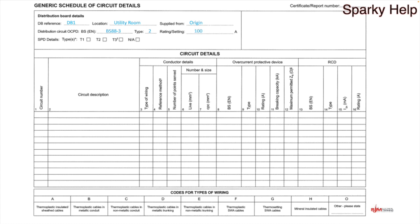SPDs — surge protective devices. What types have you got? If you've got a pre-made unit with a T2 in it, then put T2 — put whatever you happen to have. I'm going to tick NA for mine. Then we go down and fill in the circuit number, which is fairly straightforward — counting away from the main switch or whatever the numbering system happens to be. As long as it's consistent, there's circuit number one.